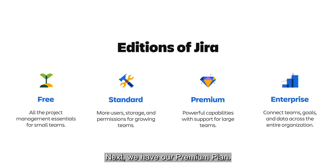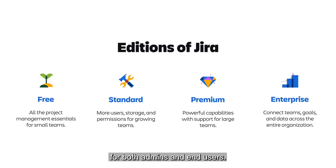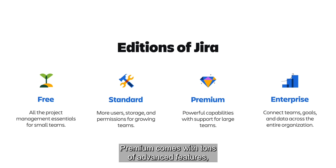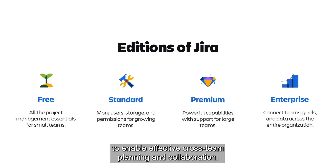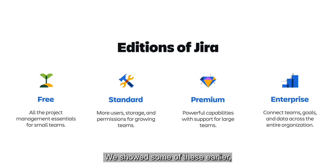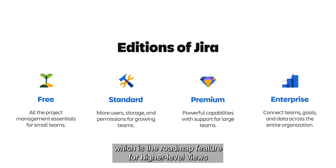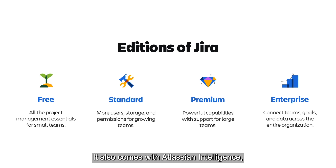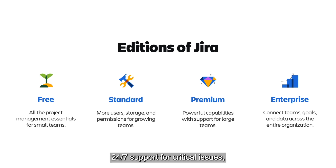Next, we have our premium plan. This plan is designed for larger teams that want to grow on a scalable platform with controls to ensure a reliable and secure experience for both admins and end users. Premium comes with tons of advanced features on top of project management essentials to enable effective cross-team planning and collaboration. Some key features with premium include plans — the roadmap feature for higher level views of multiple work streams — Atlassian intelligence, unlimited storage, unlimited and easy to configure automations, 24/7 support for critical issues, and other key features to help up-level your work.